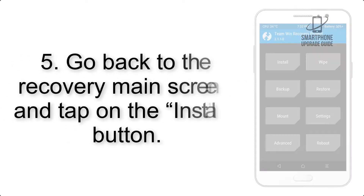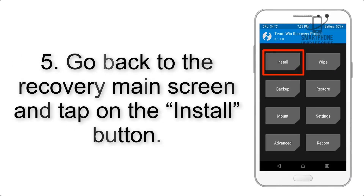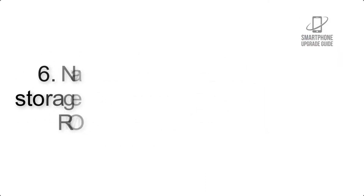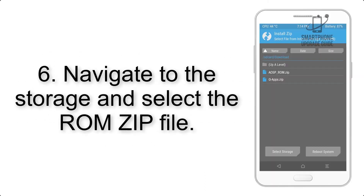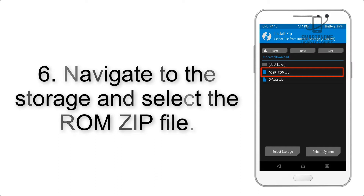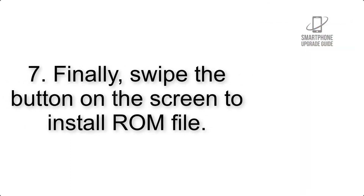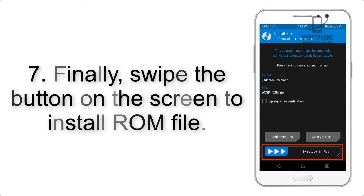Step 4: swipe the button to wipe the device. Step 5: go back to the recovery main screen and tap on the Install button. Step 6: navigate to the storage and select the ROM zip file.